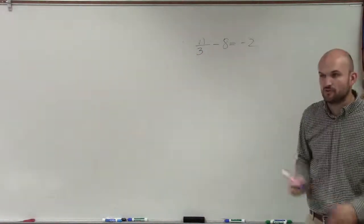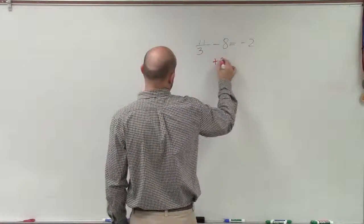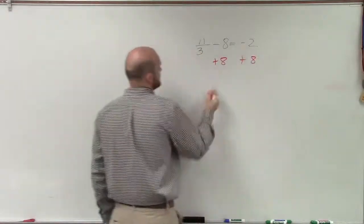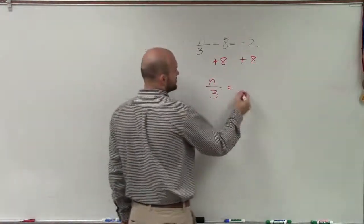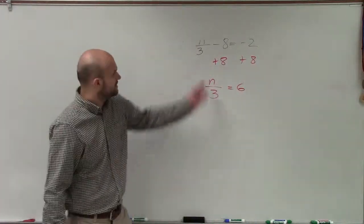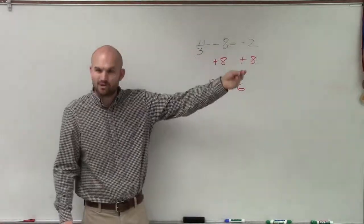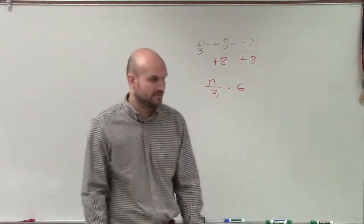So the first thing we need to do is undo addition or subtraction. And we see that my variable is being subtracted by 8. So we undo subtraction by adding 8. So now I have n divided by 3 equals negative 2 plus 8, which is 6. Because remember, negative 8 plus 8 is 0, so that leaves us with just n divided by 3.